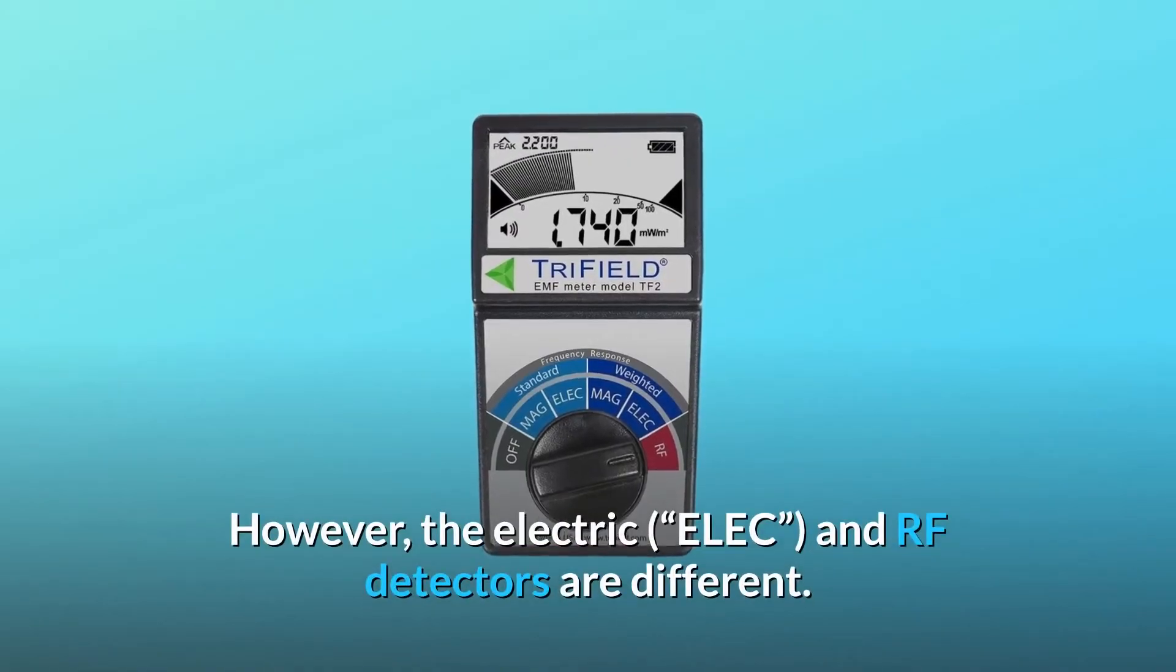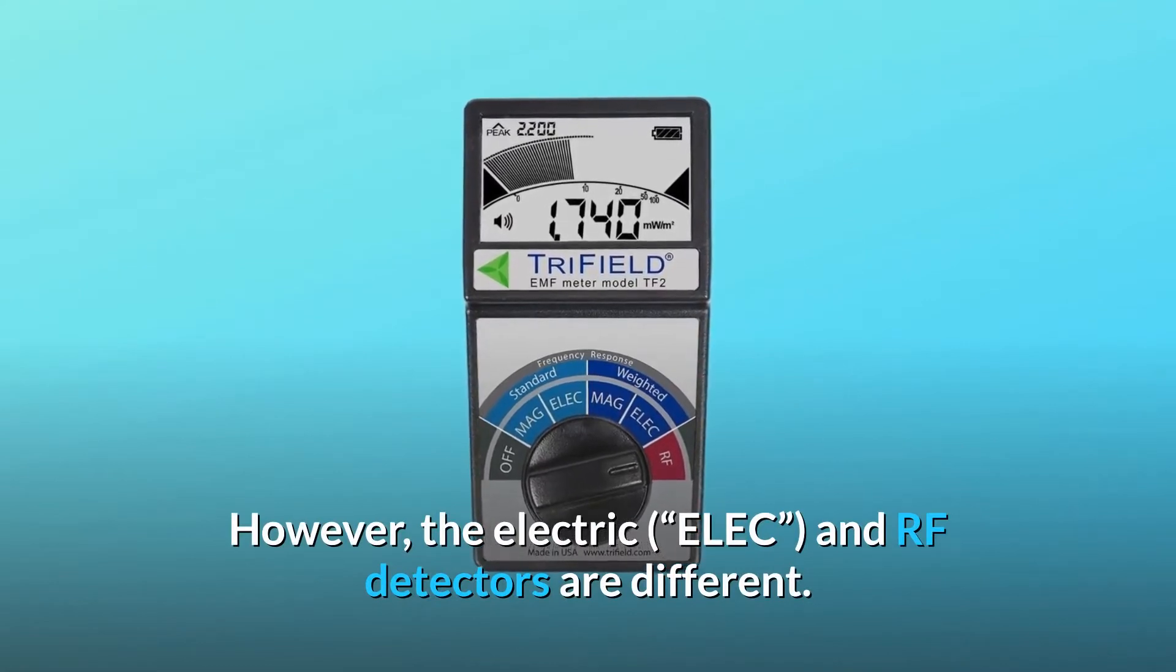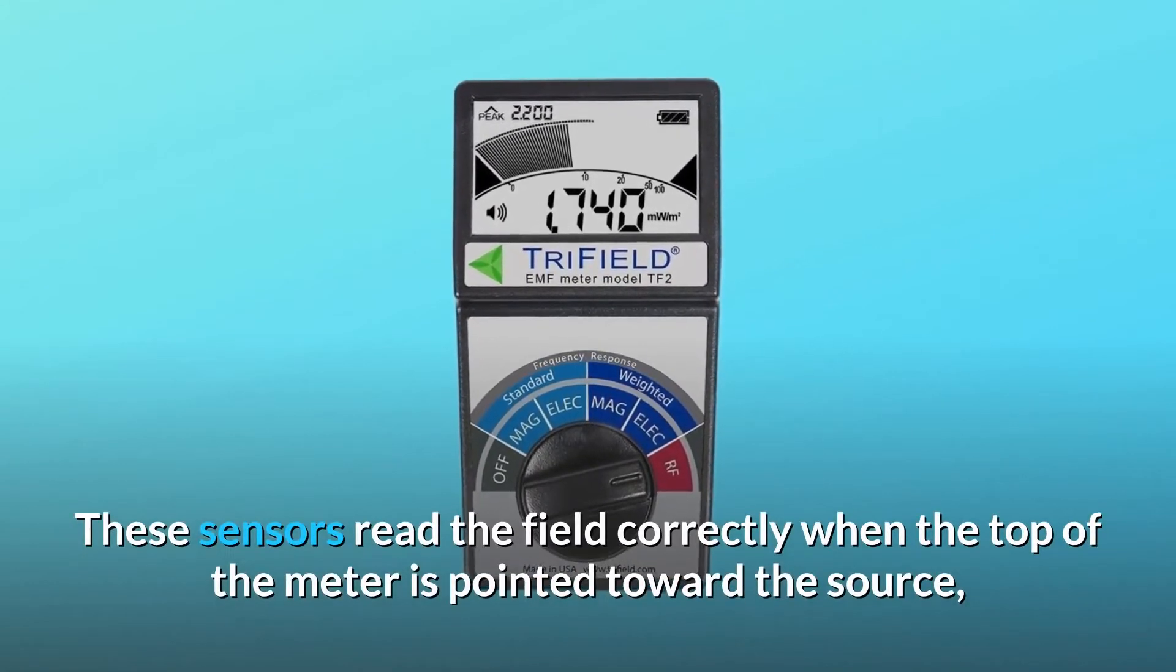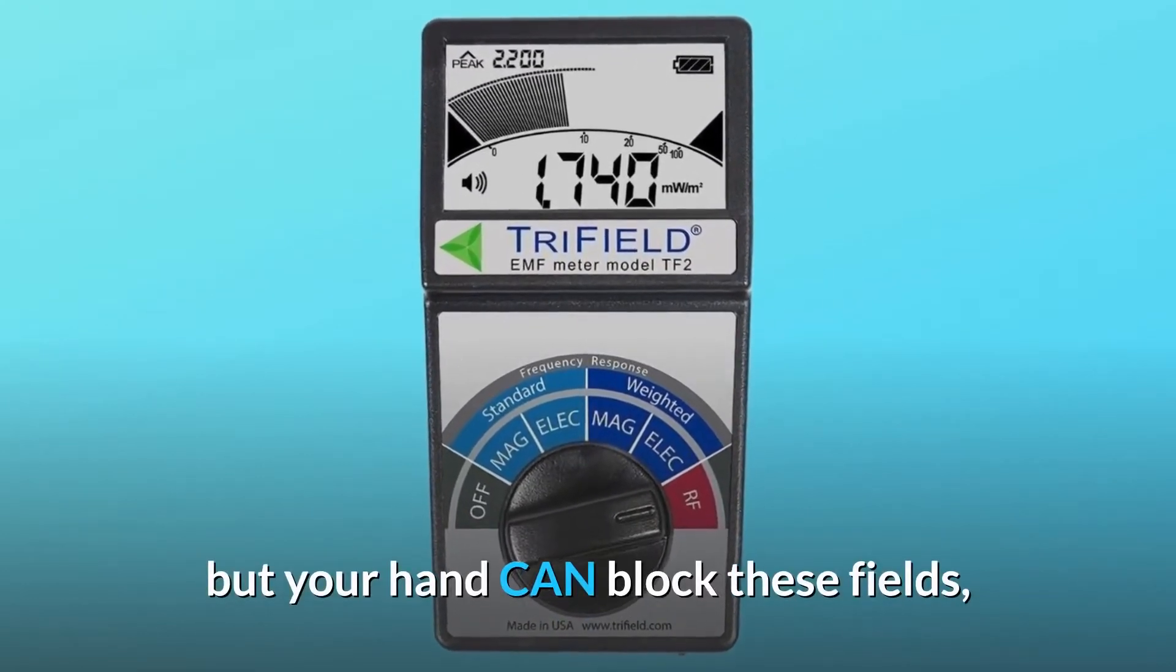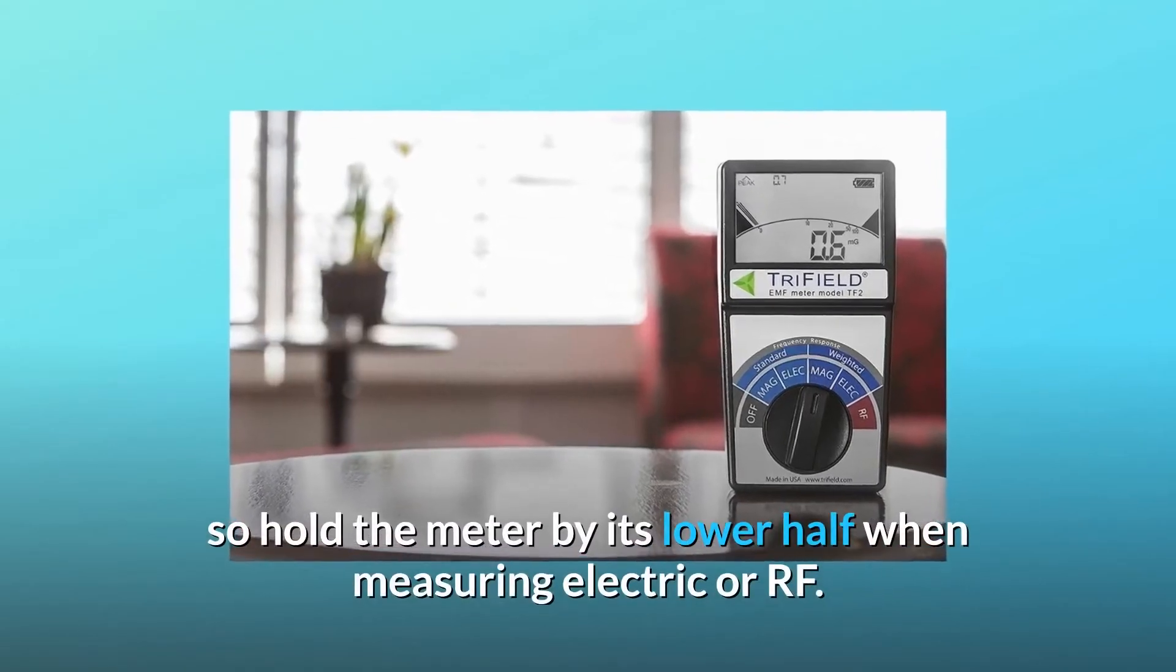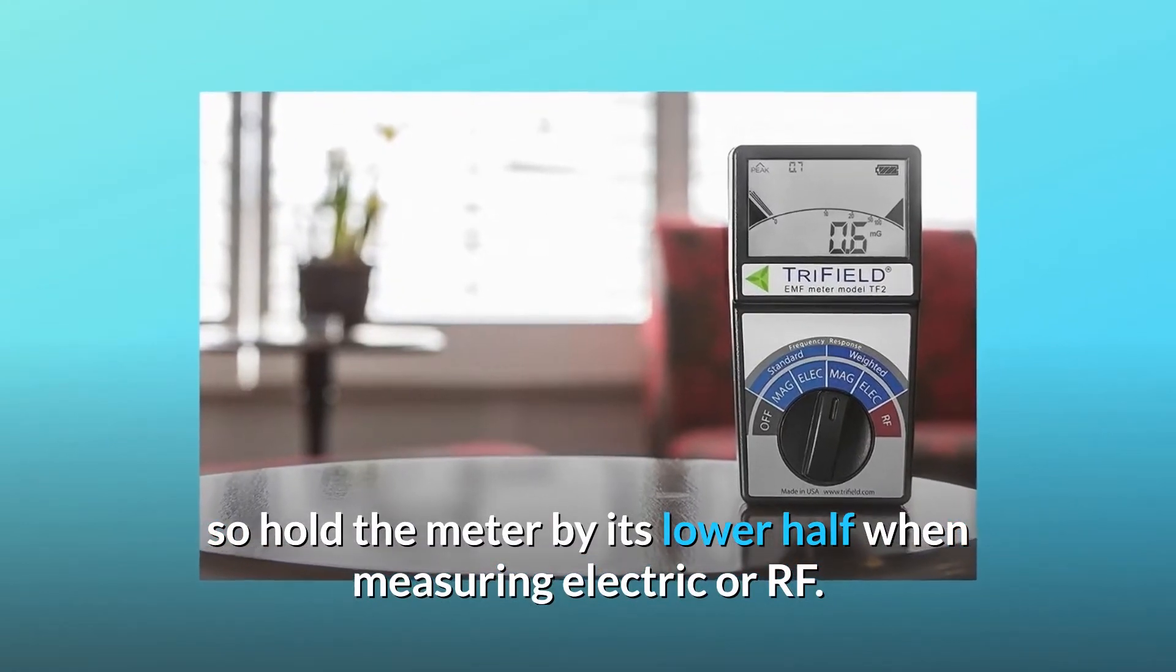However, the electric (ELEC) and RF detectors are different. These sensors read the field correctly when the top of the meter is pointed toward the source, but your hand can block these fields, so hold the meter by its lower half when measuring electric or RF.